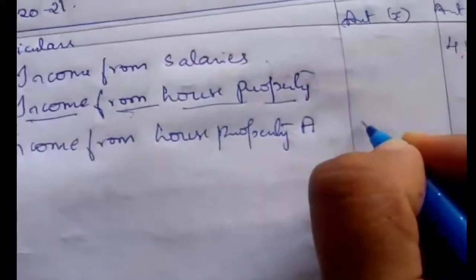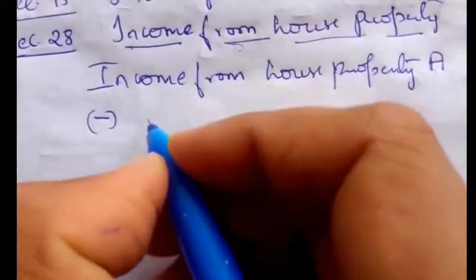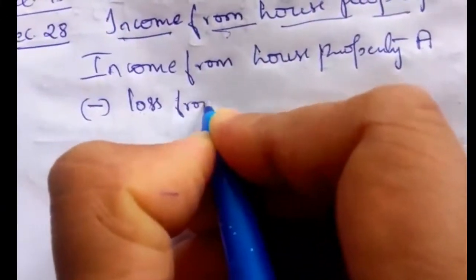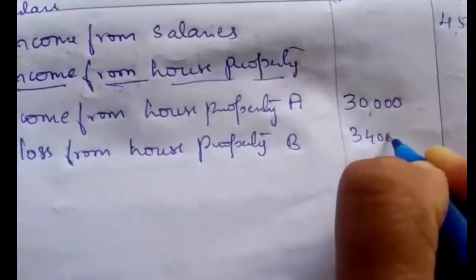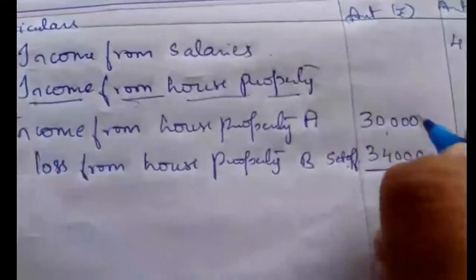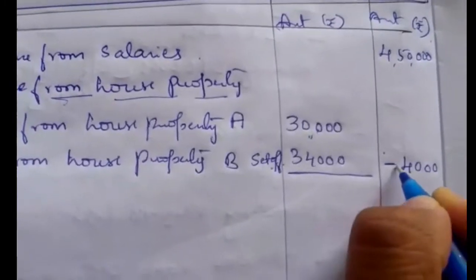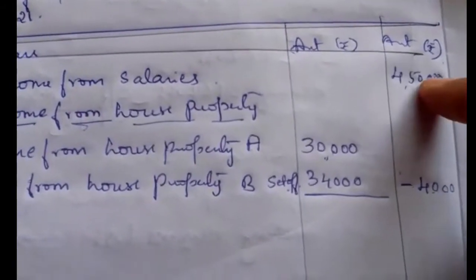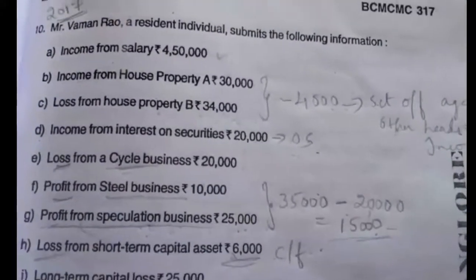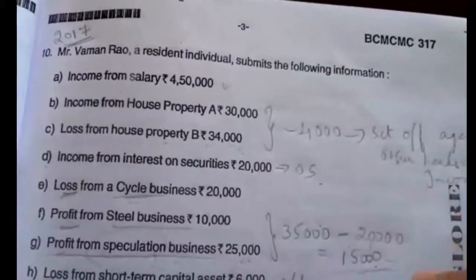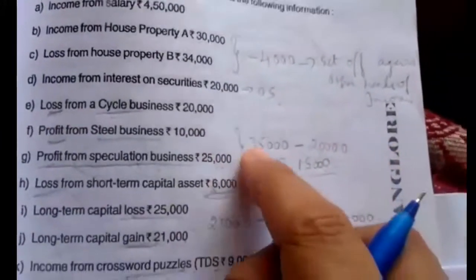Under the head income from house property, income from house property A is Rs. 30,000. From that, set off the loss from house property B of Rs. 34,000. So 30,000 minus 34,000 equals a balance loss of Rs. 4,000. This Rs. 4,000 will automatically be set off against salary income while computing the GTI totaling.